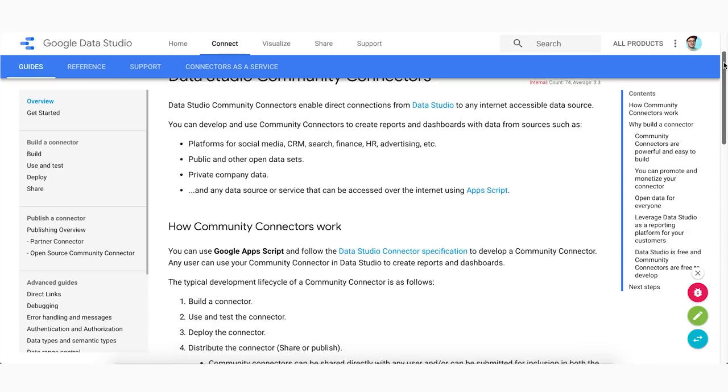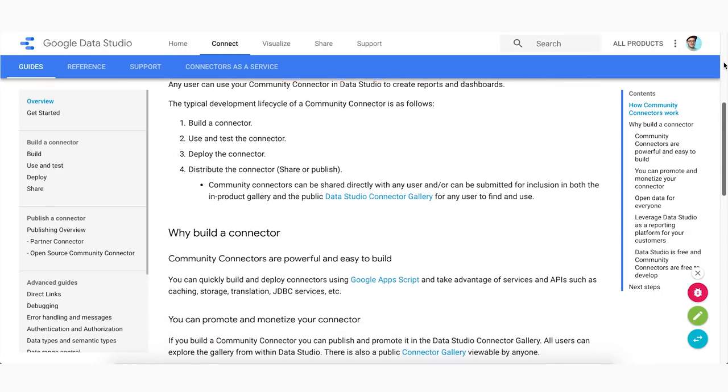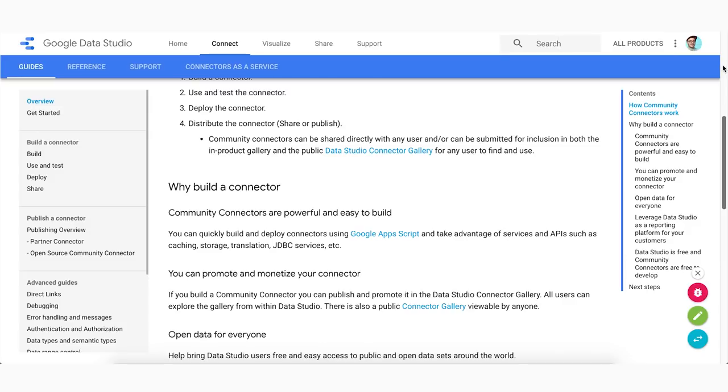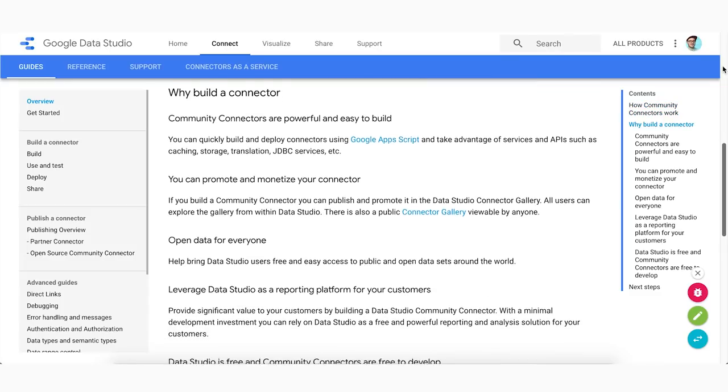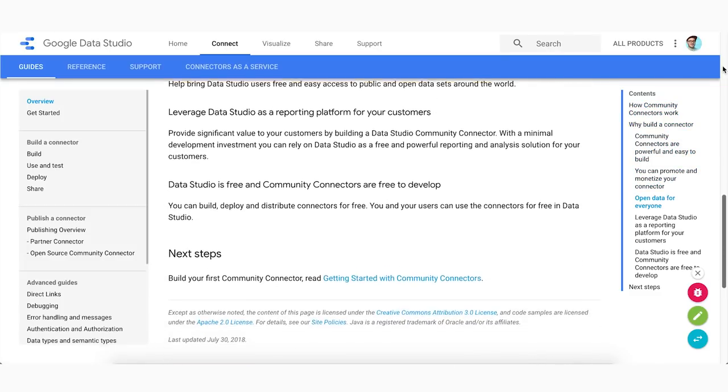And what a community connector would let you do is that it will let you access data sets that are even outside of that ecosystem. It can be behind a web API. It can be on a Postgres or MySQL database. You can create a connector that fetches that data, gives users the ability to add the configurations, and you can also attach different templates to it.